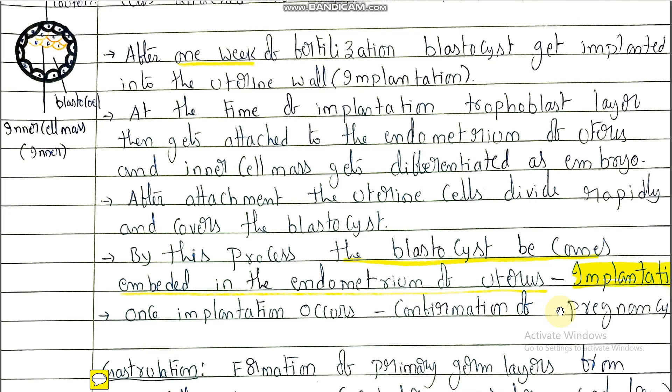Earlier we discussed that not all copulation leads to pregnancy. The reason is that sperms and ovum must be present simultaneously in the oviduct — only then does fertilization occur. So fertilization is the indication and confirmation of pregnancy.